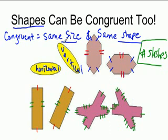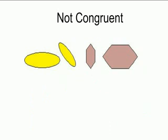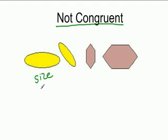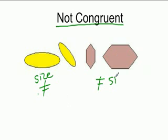Let's look at these. These are not congruent because they're almost the same shape — they're both ovals — but they're a different size, so the size is not equal. Here it's the same shape, but the size is again not equal. So they are not congruent.